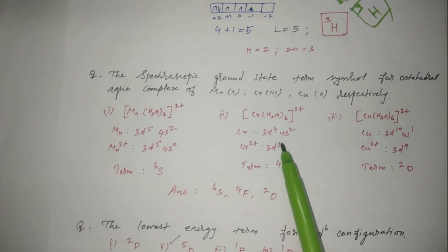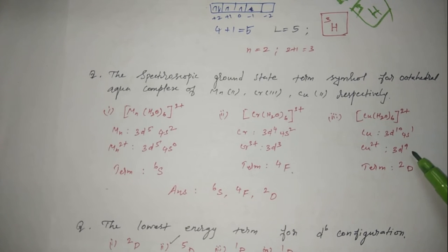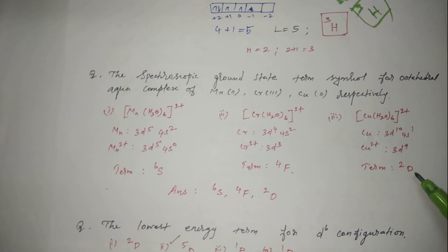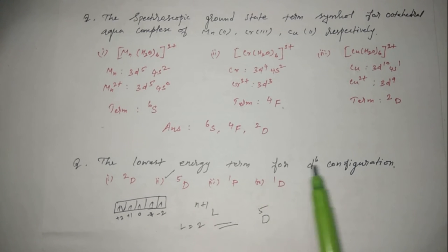For Cr³⁺ (d³ configuration): 3 unpaired electrons, 3+1=4, the term is ⁴F. For Cu²⁺ (d⁹ configuration): 2s+1=2, and the term is ²D. Next: find the lowest energy term for a d⁶ configuration.